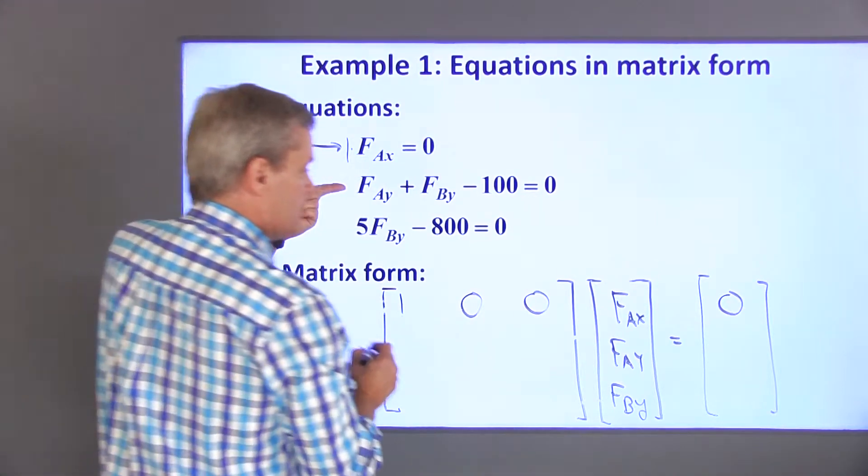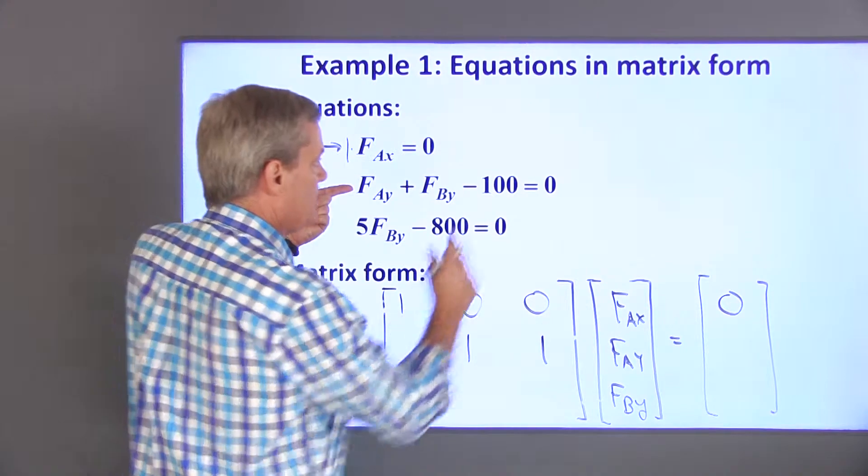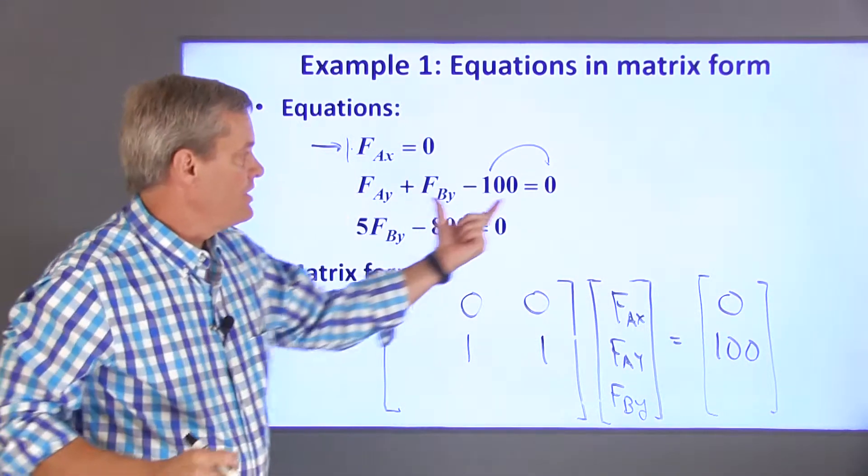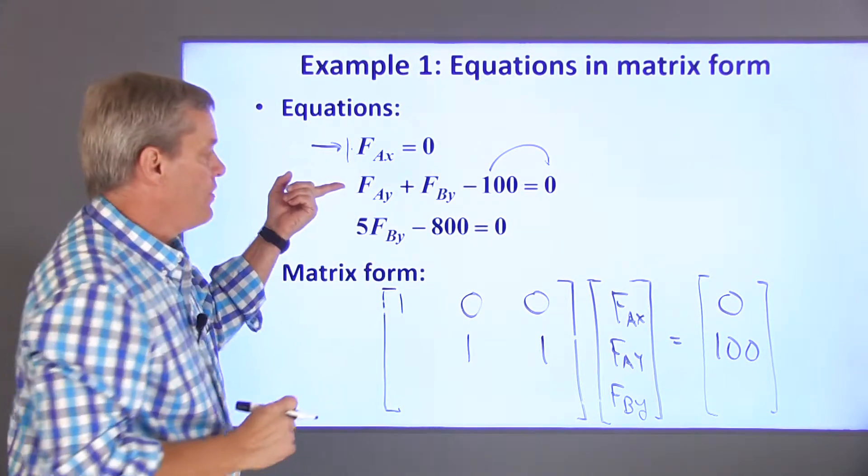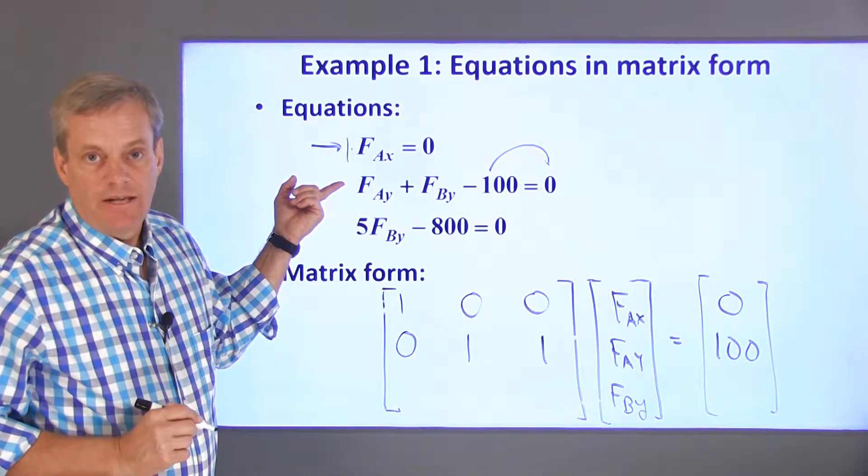The second equation is 1 times FAY plus 1 times FBY is equal to 100. When I move this to the other side of the equation, it changes its sign. There's no FAX in this equation. I can handle that by multiplying this by a 0.